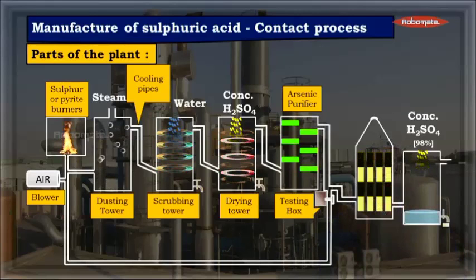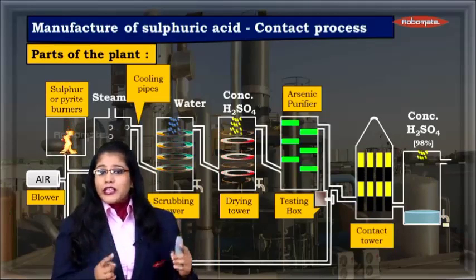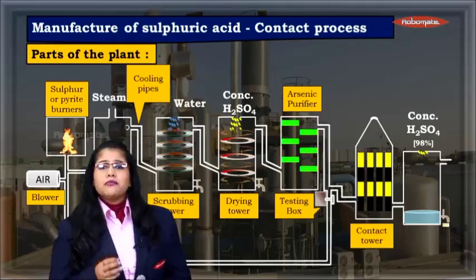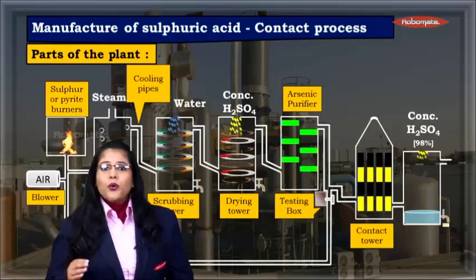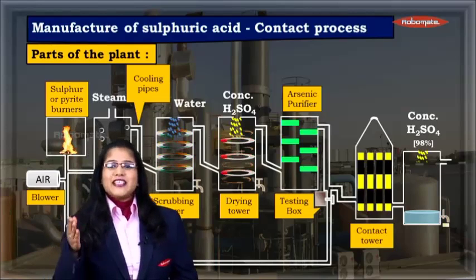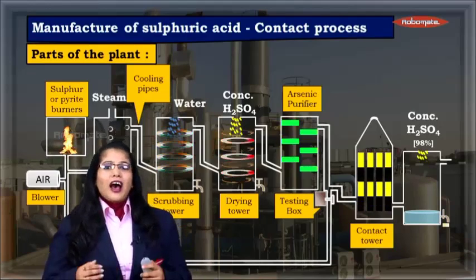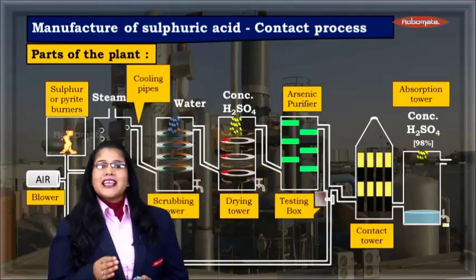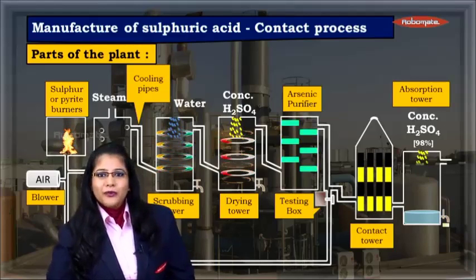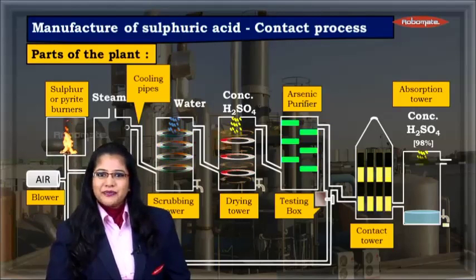Clean and dry sulphur dioxide is next sent to the contact tower. This is the most important process of the entire plant where sulphur dioxide is converted to sulphur trioxide. After the sulphur trioxide conversion, it is taken into the absorption tower where it is absorbed by concentrated sulphuric acid.